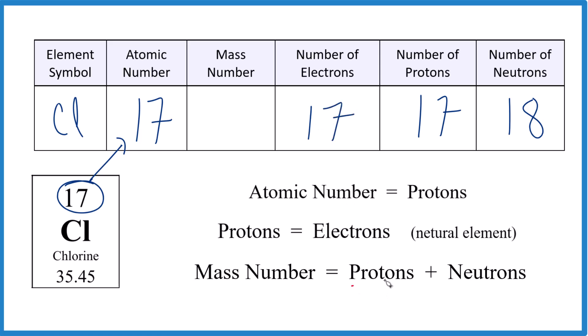Then the mass number, that's just protons plus neutrons, 17 plus 18 is 35. And we could call this the isotope chlorine-35. So let me clear this, and you give it a try.